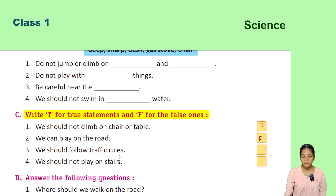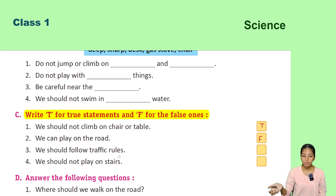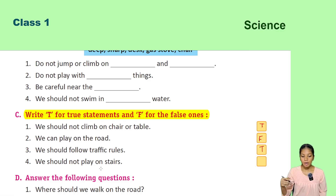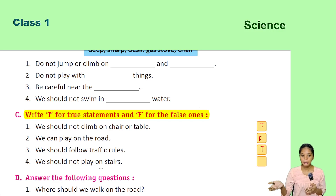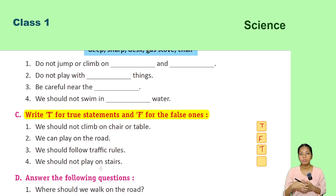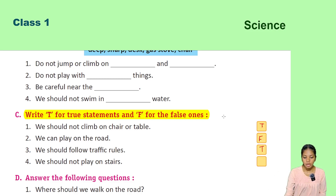We should follow traffic rules — this is a true statement, it is very necessary on the road. We should not play on stairs — this is also a true statement and a correct safety rule.